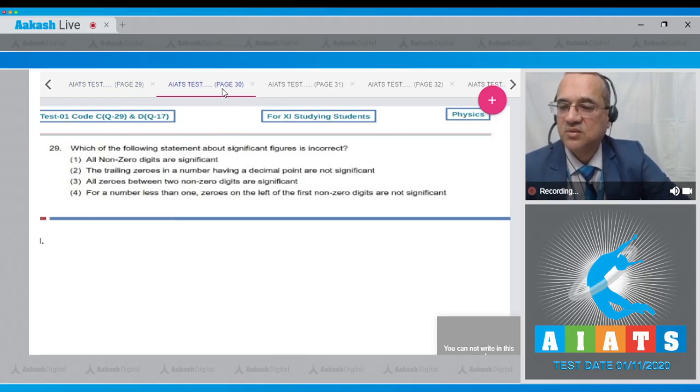Question number 29 says which of the following statement about the significant figures is incorrect? First one - all non-zero digits are significant. If you remember, this is a true statement.